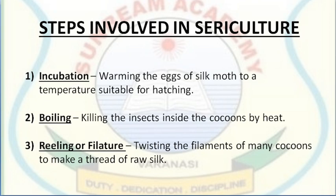The amount of usable silk in each cocoon is small, and about 5,500 silkworms are required to produce 1 kg of raw silk. Raw silk is the silk fiber obtained from the cocoon that is not yet colored or ready to make clothes. These raw silk fibers get dyed in different colors, yarns are made, and then they are used to make silk clothes.